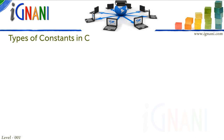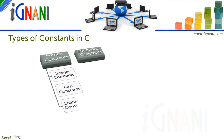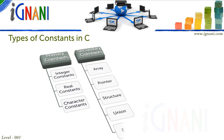Types of constants in C: Constants in C can be broadly divided into 2 categories — primary constants and secondary constants. Primary constants are further categorized as integer, real, and character constants. Secondary constants are further categorized as array, pointer, structure, union, enum, etc. In this chapter, I will only be covering primary constants. Secondary constants are covered in detail later on in this course.